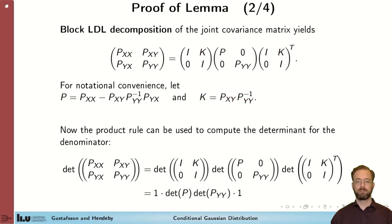We can now write the covariance matrix as a product of 3 matrices. We will now use this to compute the determinant of the joint covariance matrix as needed by the Gaussian distribution. We use the fact that the determinant of a product is the product of determinants.